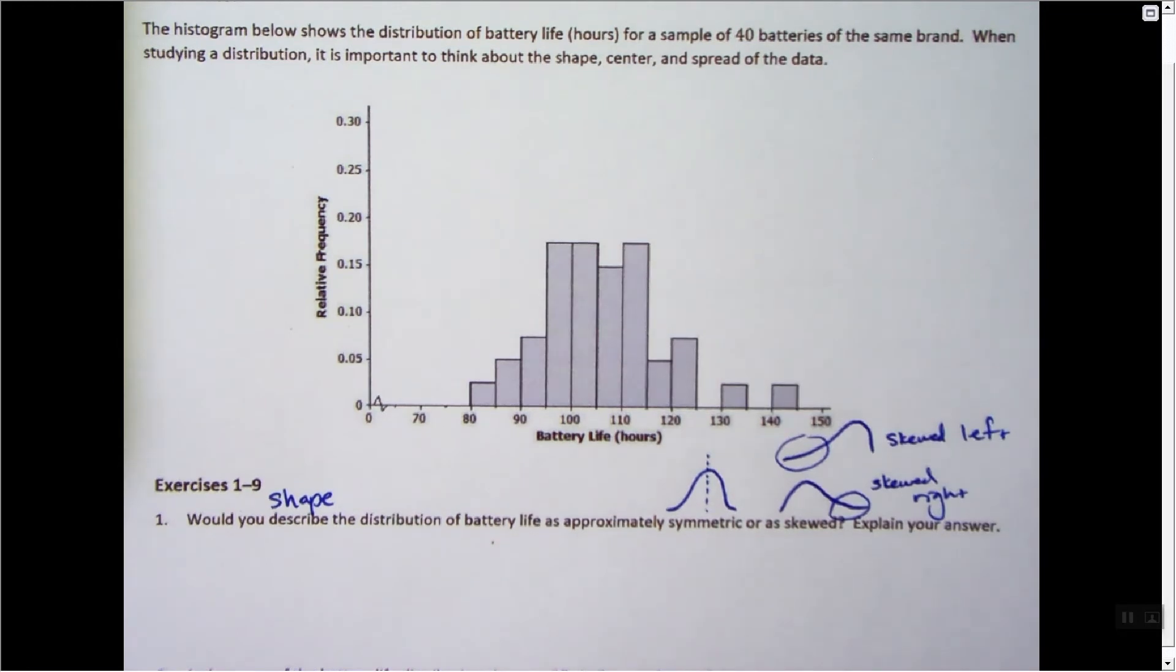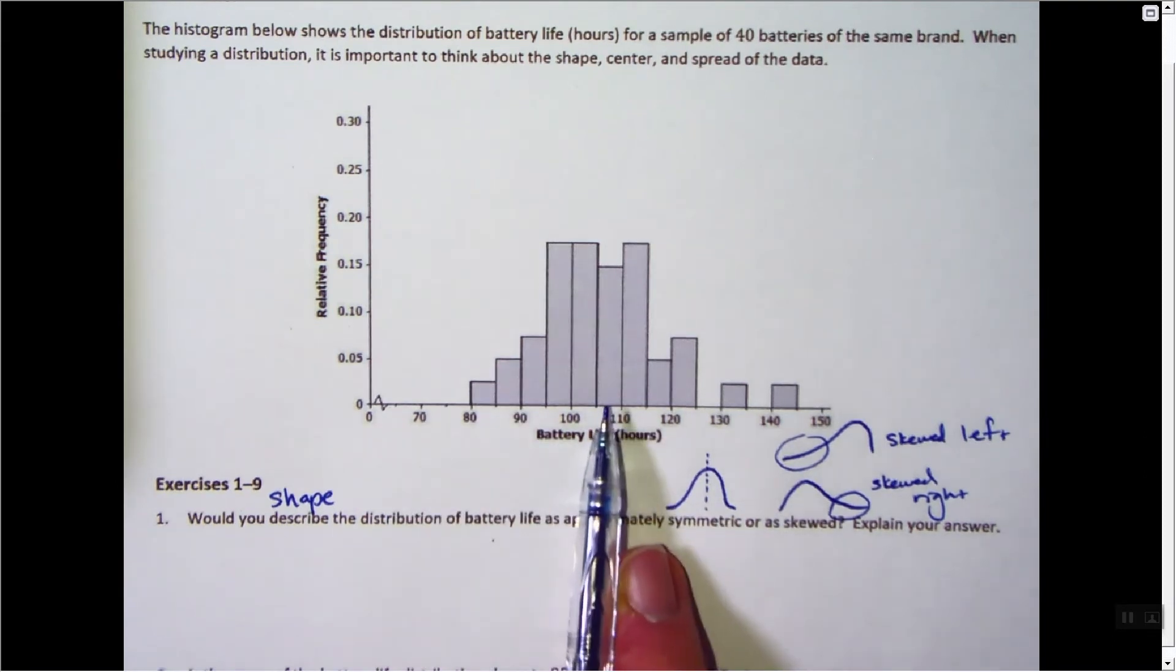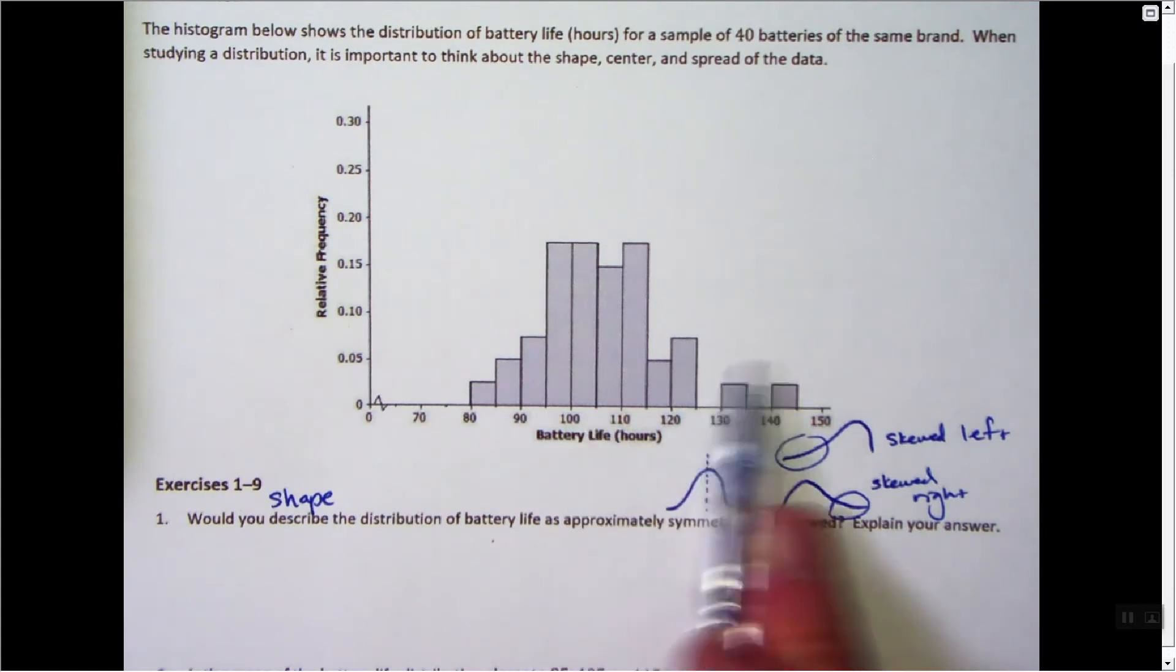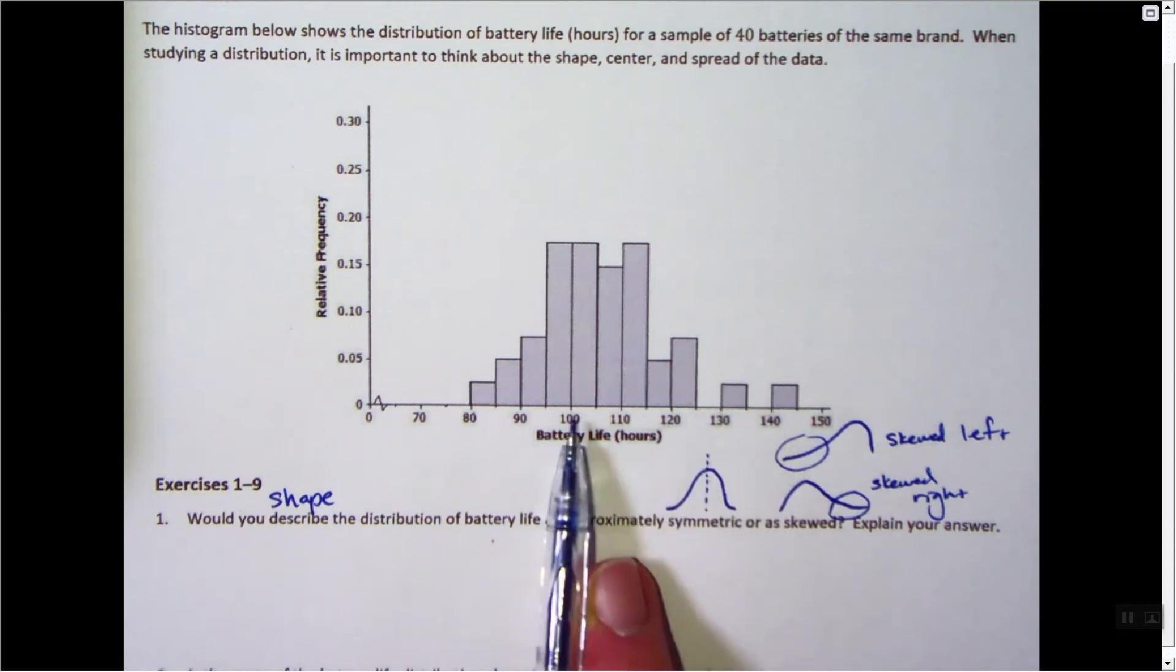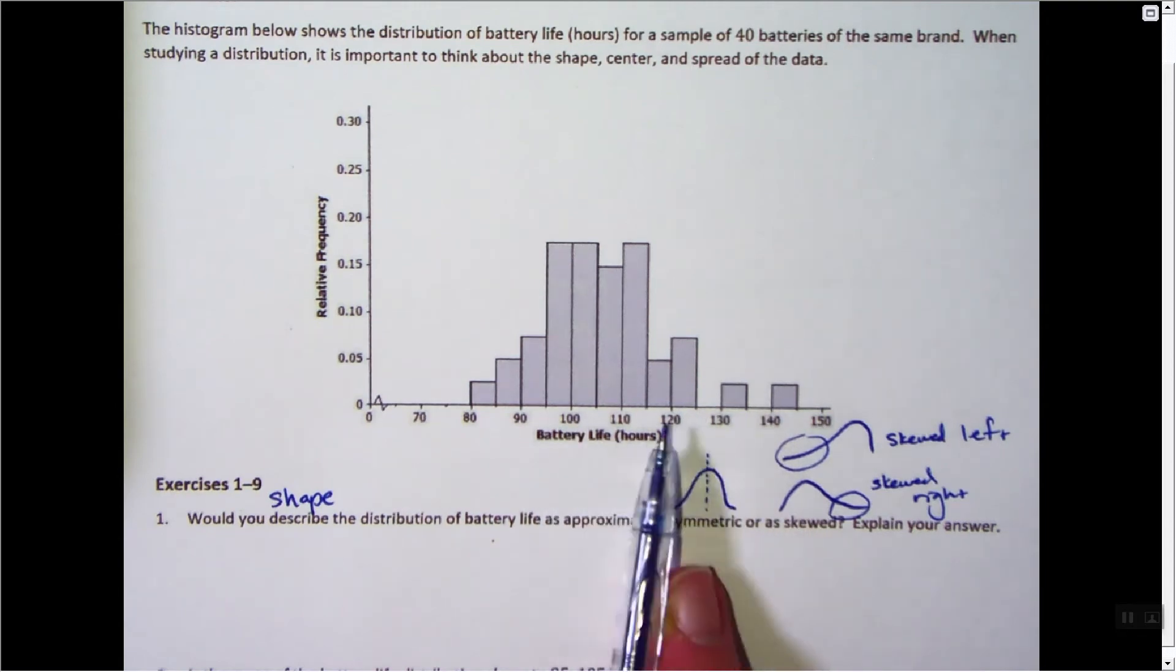Now looking back at our battery distribution, it looks, you know, the center might be somewhere around here. And it looks approximately symmetric. Maybe some of these, a few batteries lasted kind of longer than we expected. So maybe slightly skewed right. But approximately symmetric. So I'm actually going to say both. I'm going to say it's approximately symmetric.